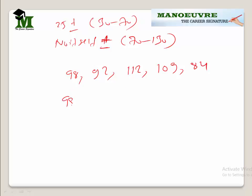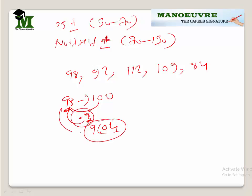Suppose you want to find the square of 98. This time I compare by 100. It is 2 less. 2 squared is 4, I write 04. Since it was 2 less, I subtract from the number itself — not from 25 as before. So 98 minus 2 gives me 96. Final answer: 9604. So 98 squared gives 9604.